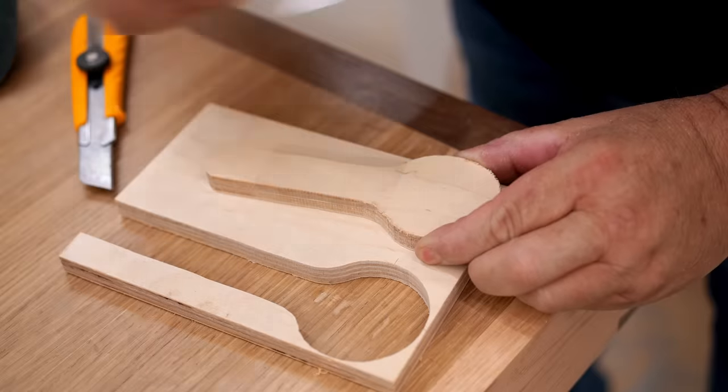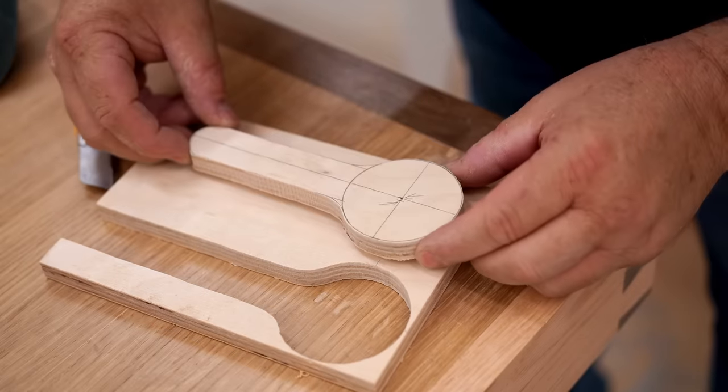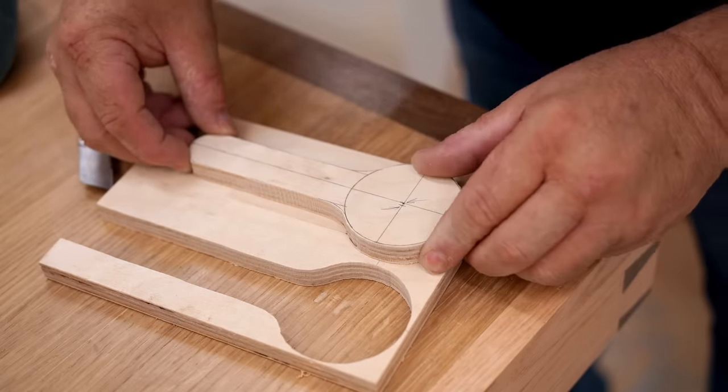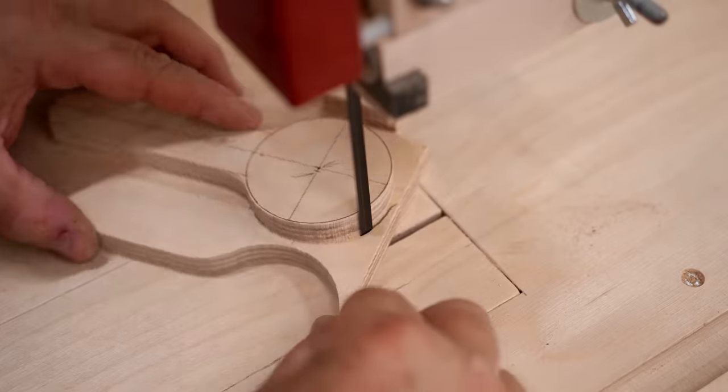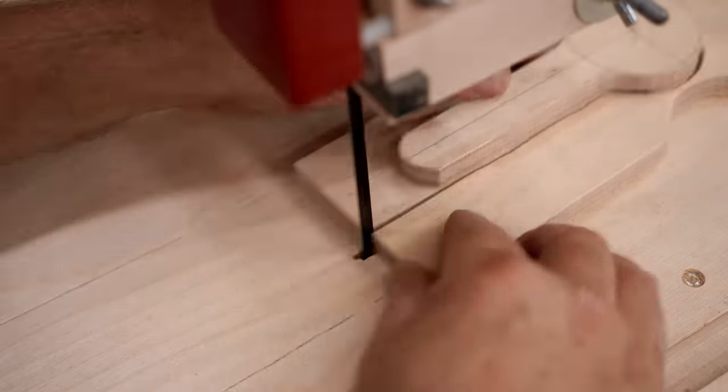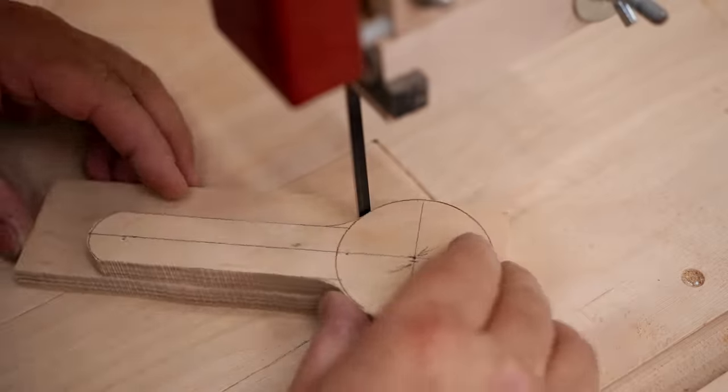I can use that one as a template to mark out the other one, but I also want both of these put together while I drill the hole for the bearings. So I'm using double-sided tape and I'm also driving in a couple of pins for good measure.